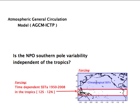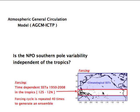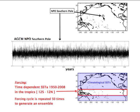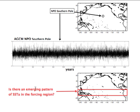In the remaining regions of the world, we use climatological sea surface temperature. To acquire statistical significance, we repeat this forcing cycle 40 times to generate an ensemble, and we examine how the tropical SST anomaly produces a response in atmospheric variables over the extratropics — in particular, sea level pressure over the southern pole of the NPO. We start the analysis by plotting a time series of this long run of the NPO southern pole. These are 2,200 years from a continuous perpetual run where the forcing cycle is repeated 40 times.